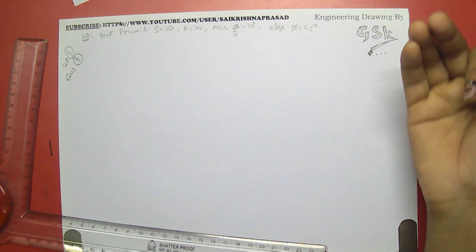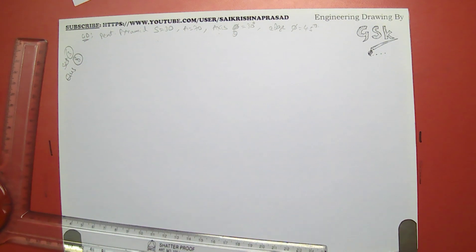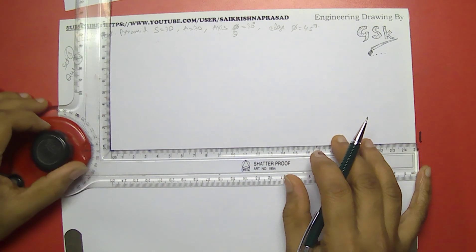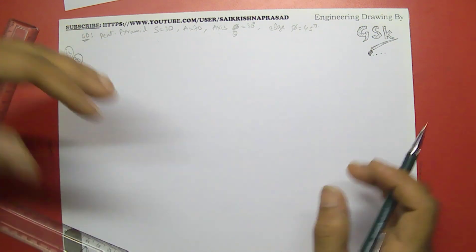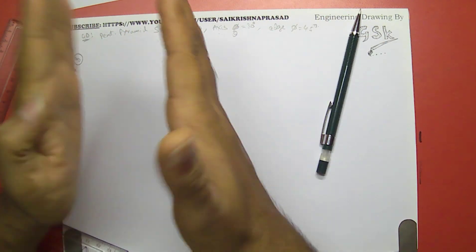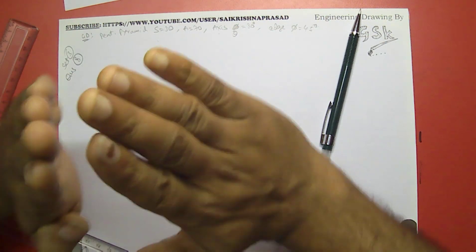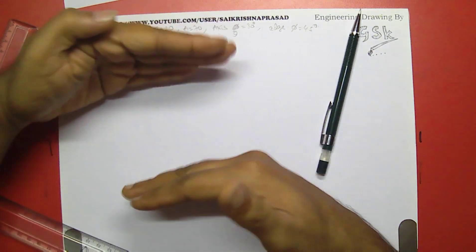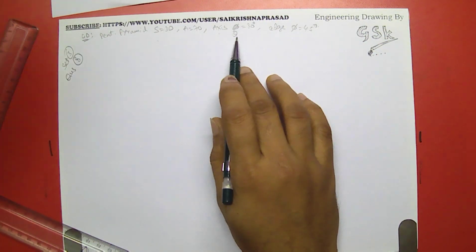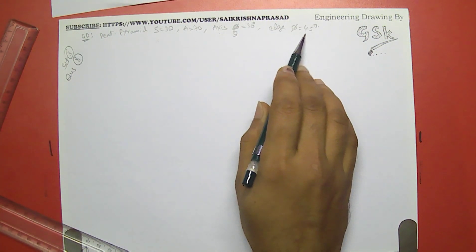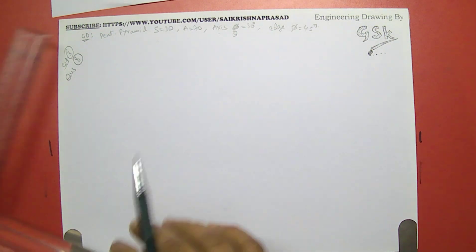Phi means inclination with the VP, theta means inclination with the HP. This problem is a 3-stage problem: in stage 1 we assume the pyramid is in the standing position resting on HP. In stage 2 we change it to 30 degrees inclination, and in the next position we change it for 45 degrees. Let us start the problem.